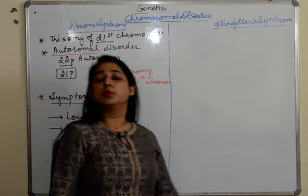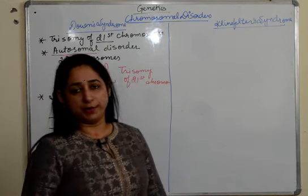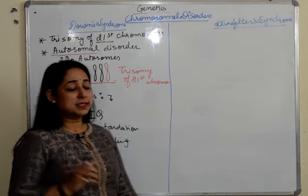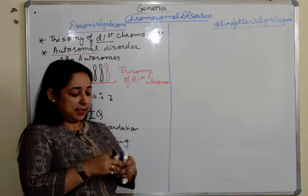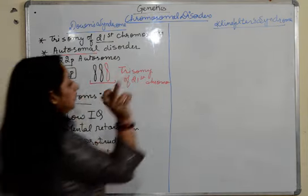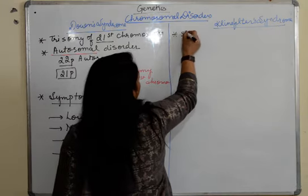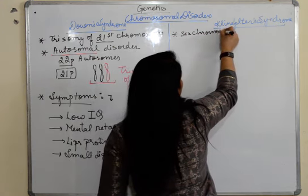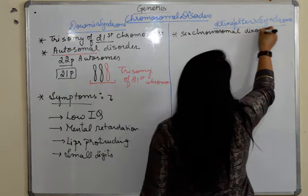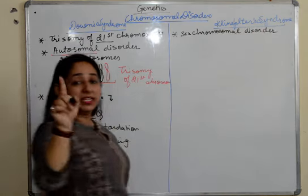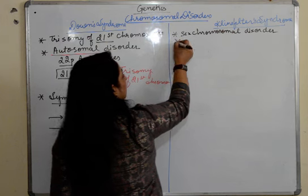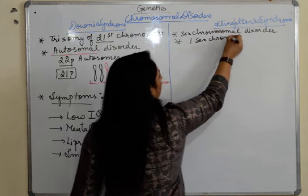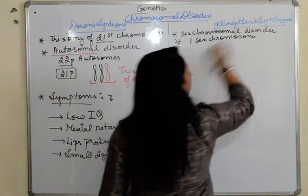Now we move to our next chromosomal disorder, that is Klinefelter syndrome. This is a sex chromosomal disorder, meaning the change is going to take place in the sex chromosome — unlike Down syndrome, which was an autosomal disorder.